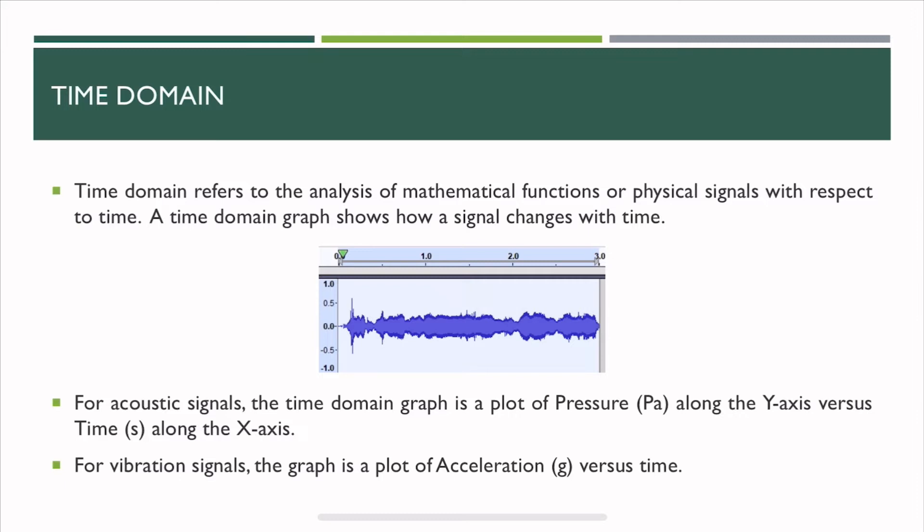The signal can be anything. It can be an acoustic signal or a vibration signal, but the y-axis can change depending on the type of signal, while the x-axis is always the same, which is time. For acoustic signals, it's a plot of pressure along the y-axis versus time along the x-axis. In this case, the pressure is a linear scale and not the decibel scale. For vibration signals, it's a plot of acceleration versus time.